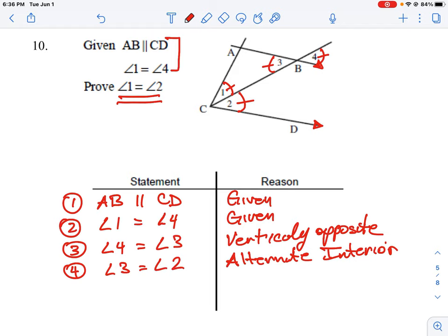And then our fourth statement here says angle 3 is equal to angle 2. So that means ultimately, if angle 3 is the same and angle 4 is the same, ultimately angle 1 equals angle 2.